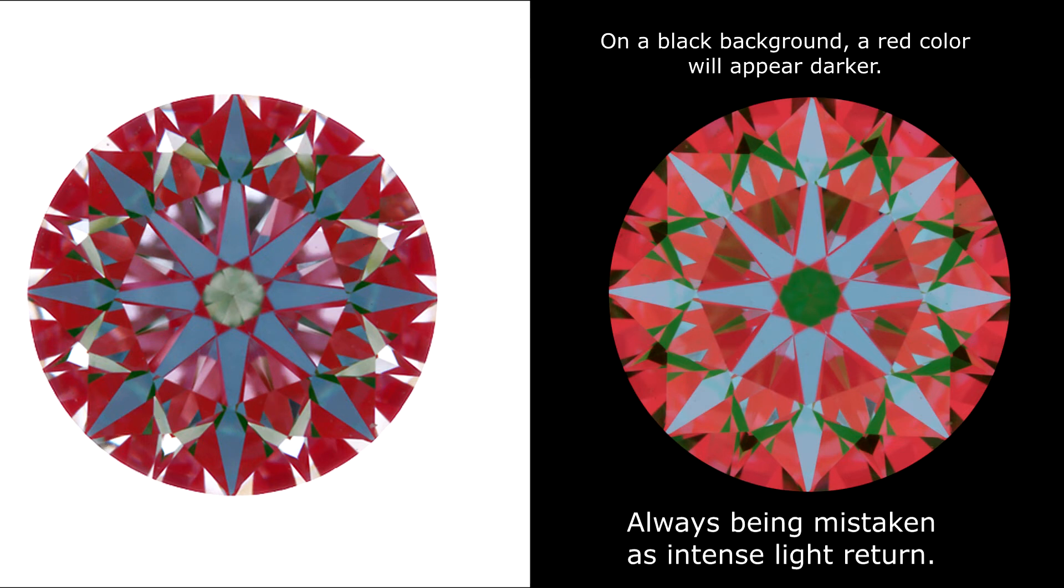Here is the same diamond on a black littered background. Just look how different it is. All the full light leakages have now become red in color. This is because on a white background, lighter red remains as light red.